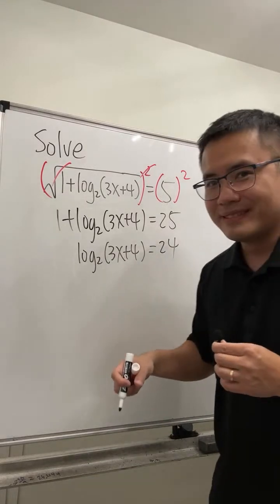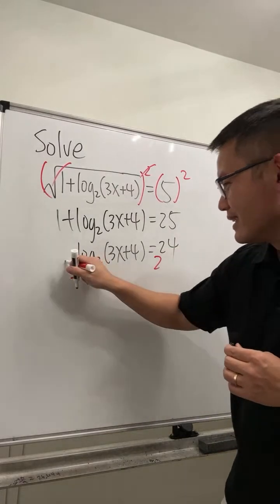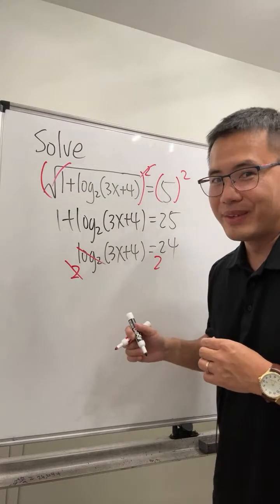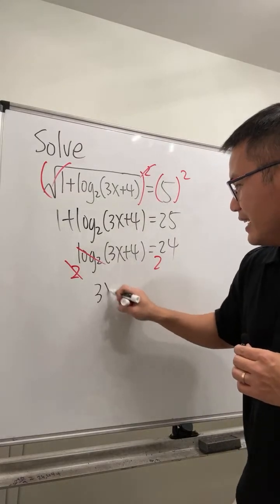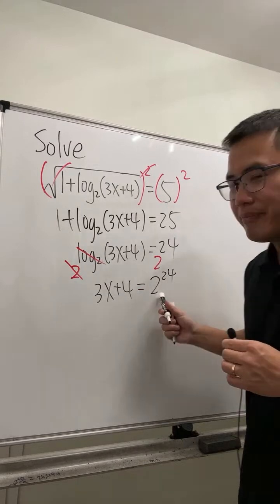And then we just do 2 to this power, 2 to that power. This and that cancel, so we get 3x plus 4 equals 2 to the 24th power, which I'm not going to bother to solve. I'm just going to leave it like that.